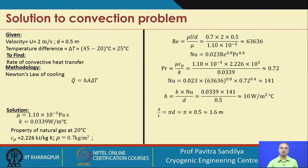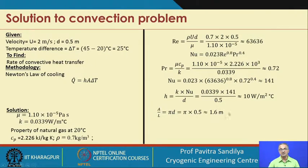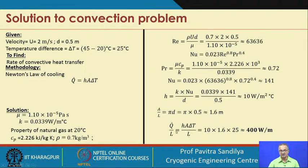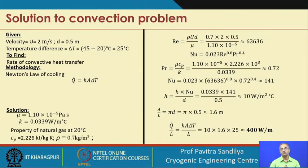Once we know the heat transfer coefficient, we go back to Newton's law of cooling. The area through which heat transfer occurs is π·D·L, so per unit length the area is π·D = 1.6 meter. Substituting into the equation gives the convective heat transfer rate per unit length as approximately 400 watt per meter. This means that for a 1 meter pipe length, 400 watts of heat passes from the wall at 45°C to the natural gas at 20°C.